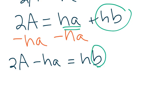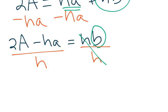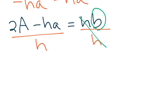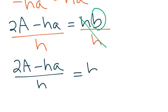Then I want to get this b by itself still, so I'm going to divide by h on both sides. The h's are gone, and I am left with (2A - ha)/h, and that equals b.